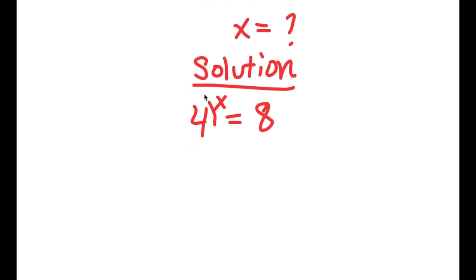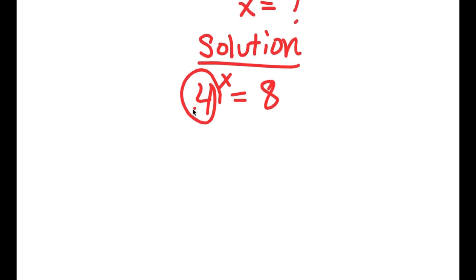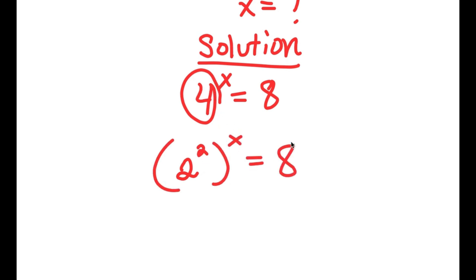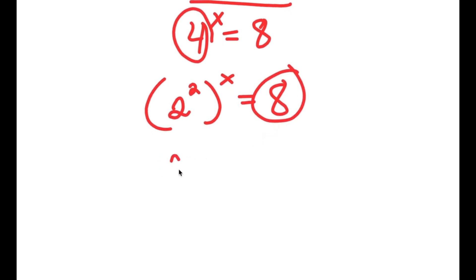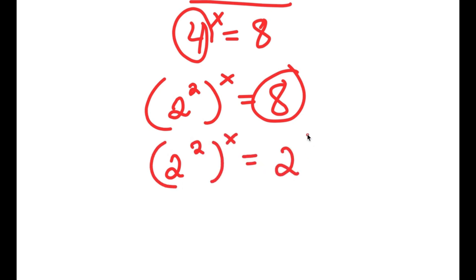Now 4 is the same thing as 2 squared, so I'm going to rewrite this as 2 squared to the power of x — all I did was replace 4 with 2 squared. And 8 is the same thing as 2 to the power of 3, so I'll replace 8 with 2 to the power of 3. So I have 2 squared to the power of x is equal to 2 to the power of 3.